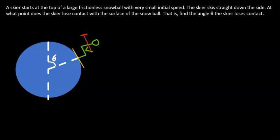Let's look at the following problem. A skier starts at the top of a very large, frictionless snowball with very small initial speed. That's the point of the starting point, that is.